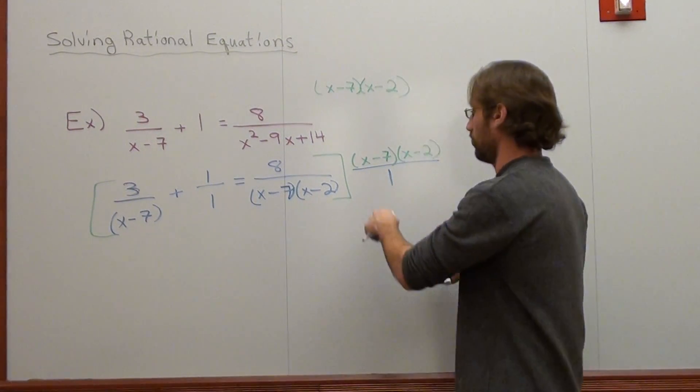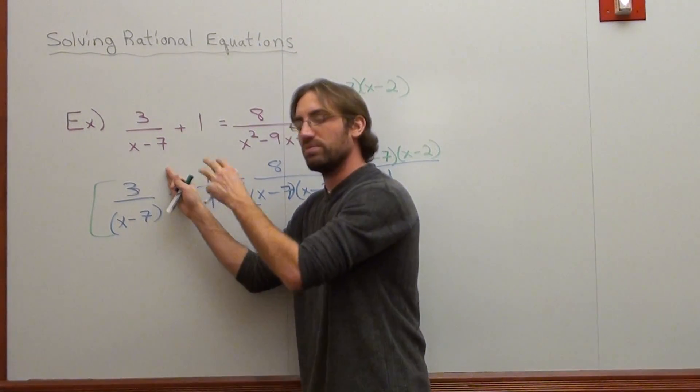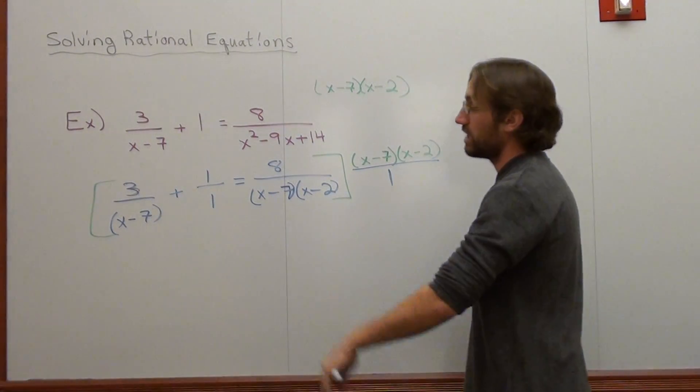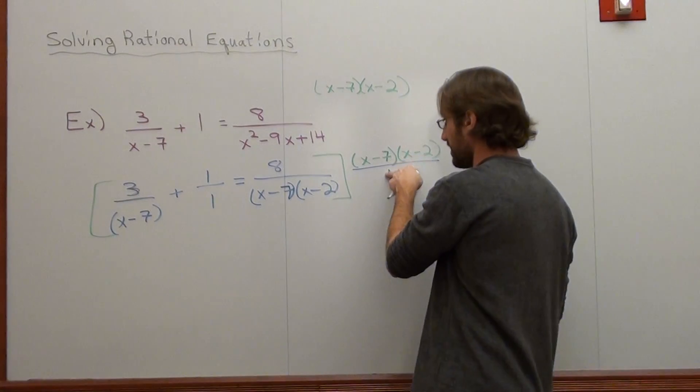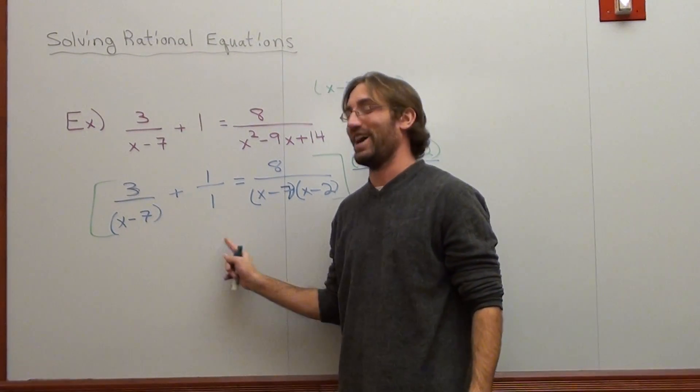So if you have a question, why is it x minus 7, x minus 7? No. That's an expression. What you do on the bottom, you do on the top to balance it. But in an equation, what you do on one side, you do on the other. So that's what we're going to do. I'm going to multiply this junk by each term, or each fraction.